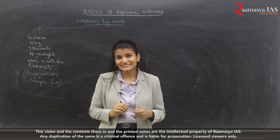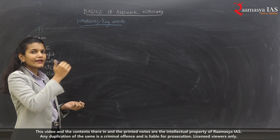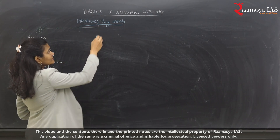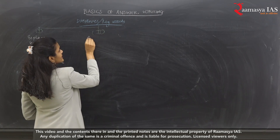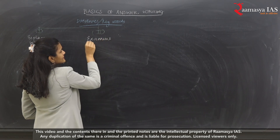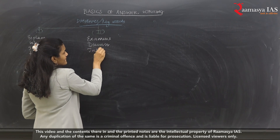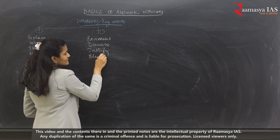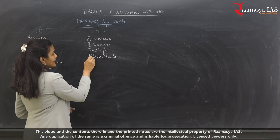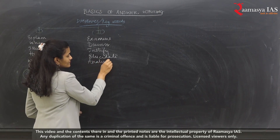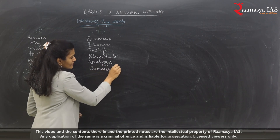Now let's take the second category of keywords, which is a little higher level than the first. The second category includes: Examine, Discuss, Justify, Elucidate — which means to make something more clear — Analyze, and Comment.